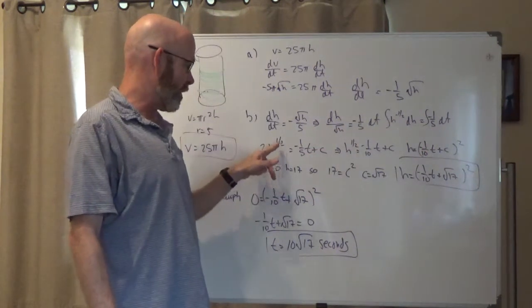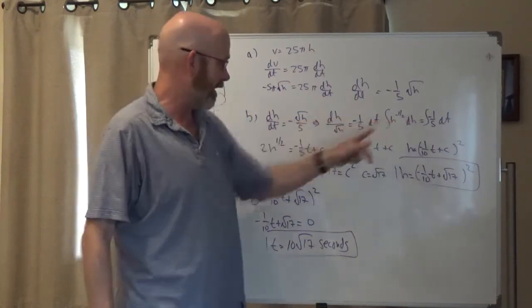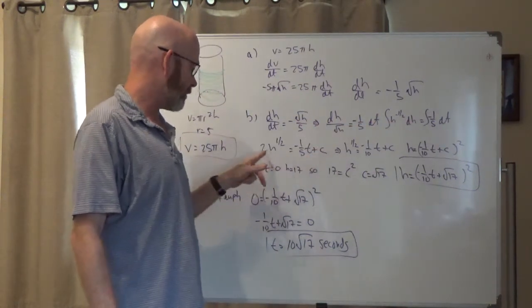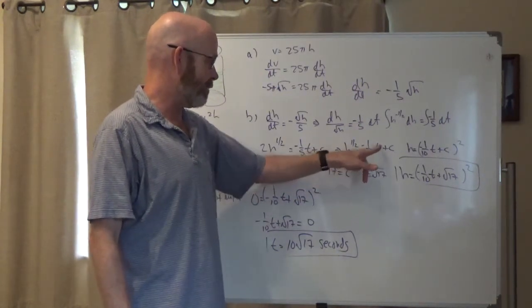This becomes h to the one-half over one-half, or two h to the one-half. This just becomes negative one-fifth t plus c. I'm going to divide it by two. I've got h to the one-half equals negative one-tenth t plus c.